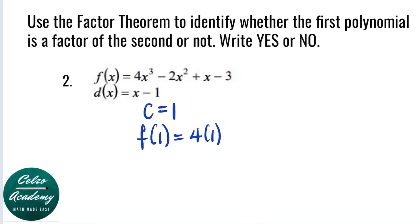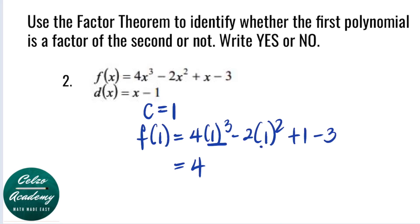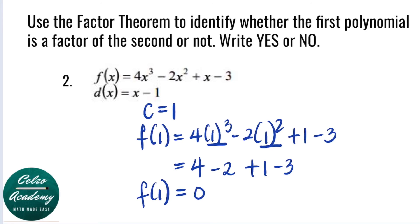We have 4 times 1 to the third, minus 2 times 1 squared, plus 1, minus 3. Simplifying this: 1 to the third is 1, times 4, we have 4. Next, 1 squared is 1, times negative 2 is minus 2. Then we have plus 1 minus 3. Simplifying from left to right: 4 minus 2 is 2; 2 plus 1 is 3; 3 minus 3 is 0. So our f of 1 is equal to 0. Since the remainder is 0, this means that x minus 1 is a factor of our f of x.